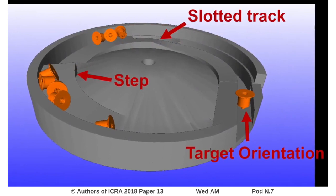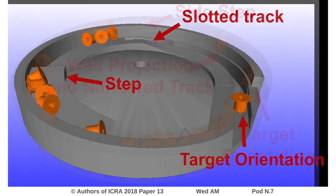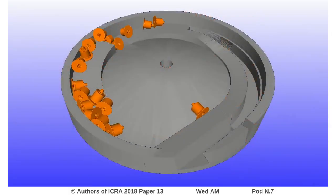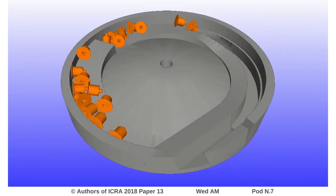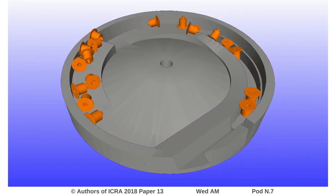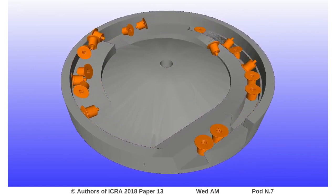The models of the optimized traps are combined to make a full bowl design and tested in simulation. The sequence consisting of a step and a slotted track is unable to fully orient the part to the target orientation, as some parts in the upright orientation are not toppled by the step.